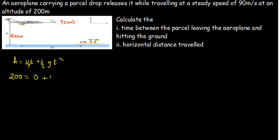And then plus half. Since the parcel is dropping, g is going to be positive and then t squared. So this is going to give us 200 being equal to 4.9 t squared.